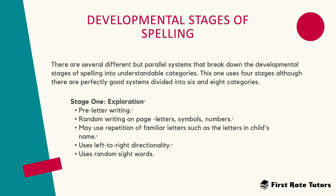There are several different but parallel systems that break down the developmental stages of spelling into understandable categories. This is one system of four stages, although there are several other systems divided into six and eight categories. Let's look at one of the popular systems of spelling stages in a child's life.